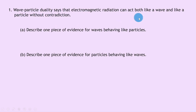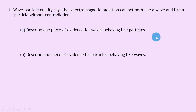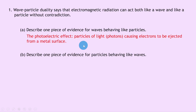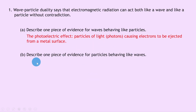Question one says wave-particle duality states that electromagnetic radiation can act both like a wave and like a particle without contradiction. Part a says to describe one piece of evidence for waves behaving like particles. One piece of evidence would be the photoelectric effect, which is particles of light — i.e. photons — causing electrons to be ejected from a metal surface.